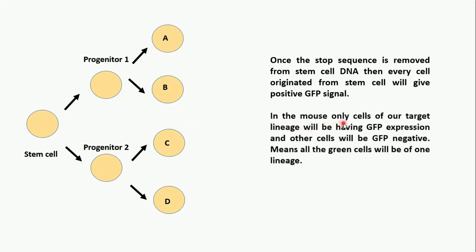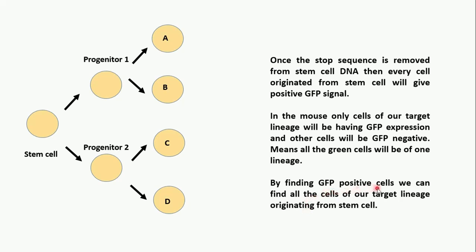In the mouse, only cells of our target lineage will have GFP expression and other cells will be GFP negative. All the green cells will belong to one lineage — our target lineage. We can dissect the mouse, find the GFP-positive cells, and say that all GFP-positive cells originated from our stem cells, meaning they are part of one lineage. It is a great technique of cell biology and molecular biology by which we can easily trace the lineage.